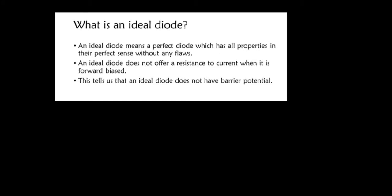In the ideal diode, we assume that it doesn't have any biopotential. This makes us consider whether an ideal diode will have a depletion layer or not, because it doesn't have any biopotential, meaning that the electrons can flow across the P-N junction easily. I'll leave that question for you to look for an answer.